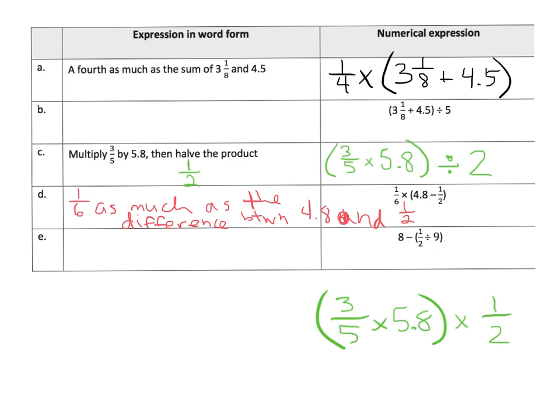And then right here, you've got the quotient 1 half divided by 9. So this is going to be the difference between 8 and the quotient of 1 half and 9. That's one way to say it. Or another way you could say it is the difference of 8 and the answer to 1 half divided by 9. The difference between 8 and the quotient of 1 half and 9.